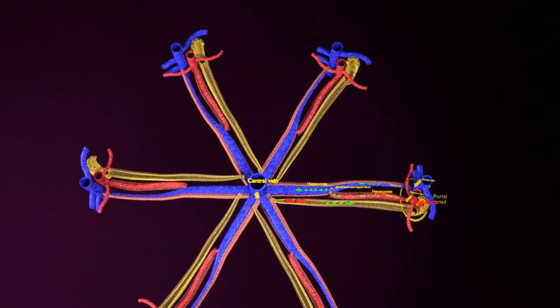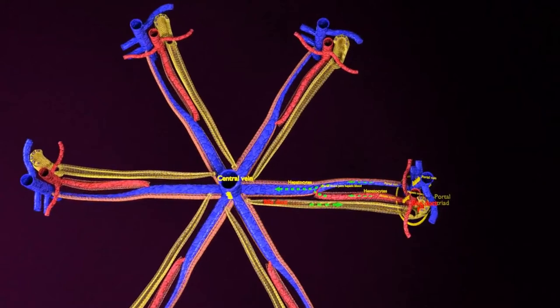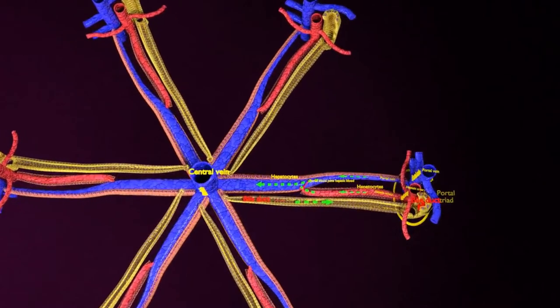Cords of hepatic artery and blood containing sinusoids radiate from the central vein to the peripheral portal triads.